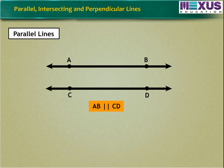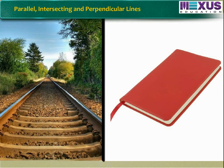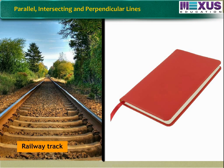It can be denoted as. The symbol for parallel is. Examples of parallel lines are a railway track, two opposite edges of a notebook, etc.